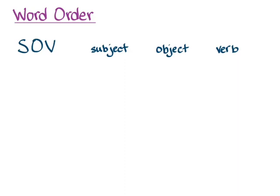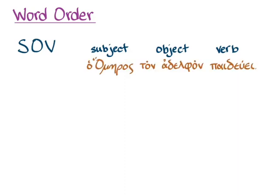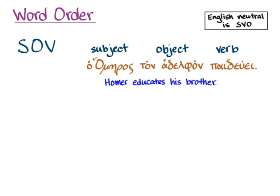So we would see that as the neutral version of this sentence. The neutral version in English is SVO — subject, verb, object. And so the neutral way to translate this sentence into English is 'Homer educates his brother.'